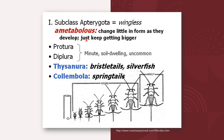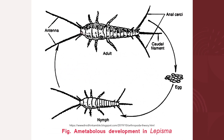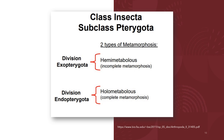In ametabolous development, there is little change in form as they develop — they just keep getting bigger. The orders under the subclass Apterygota include Protura, Diplura, Thysanura, and Collembola. The silverfish and bristletails are under the order Thysanura, and springtails are under Collembola. The silverfish of the genus Lepisma is a member exhibiting ametabolous development.